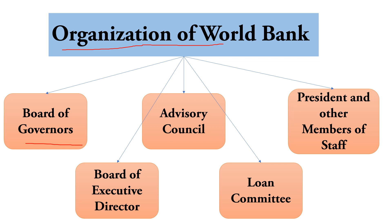The second body is the Board of Executive Directors, which consists of 21 executive directors. Five members are appointed directly by the permanent member countries — America, France, UK, Japan, and Germany — for two-year terms. The remaining 16 members are elected by the other member countries. Each executive director holds voting power in proportion to the share held by their government. The Board of Executive Directors meets regularly once a month to carry out the routine working of the bank.